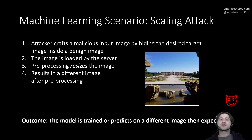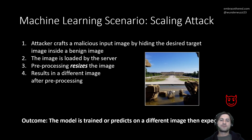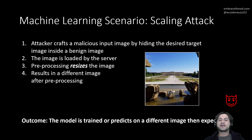How does this apply to machine learning? The attacker crafts a malicious input image and hides a desired target image within that larger image — usually the outer image has to be about two to ten times larger than the image hidden inside. When the server processes that image, in machine learning there's always a pre-processing step where the image gets resized to a well-defined size that is then fed into the neural network. This means the image actually being processed by the neural network is a different image than what the server initially received from the client.